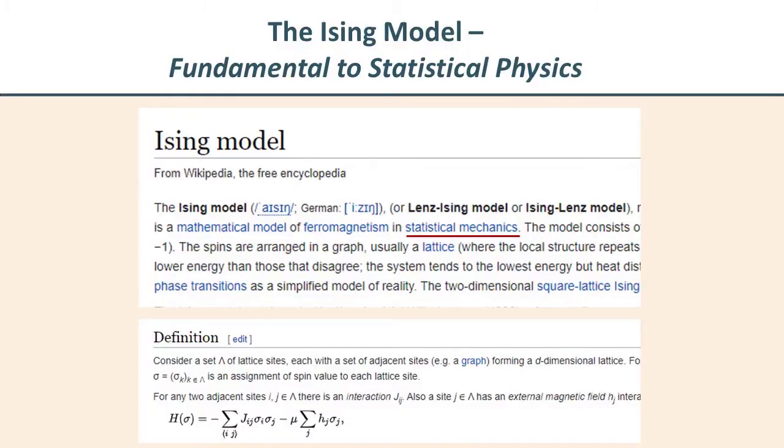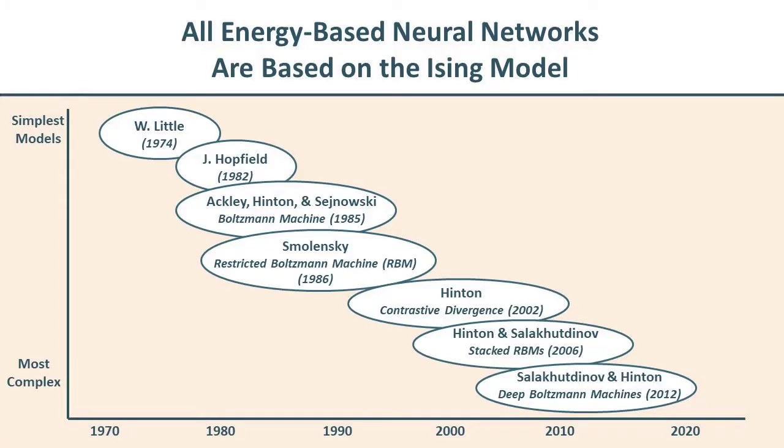It's based on a simple physics equation called the Ising equation. That equation itself is fairly old, and it was foundational to the energy-based AI as we know it today — foundational to the Hopfield neural network, then the simple Boltzmann machine, then the restricted Boltzmann machine, and then to all the deep learning architectures.